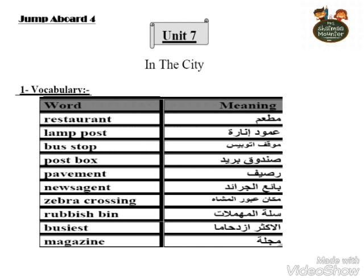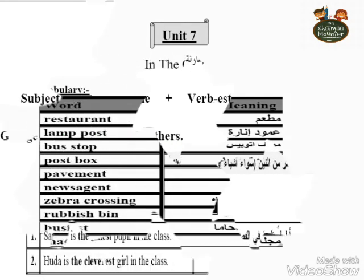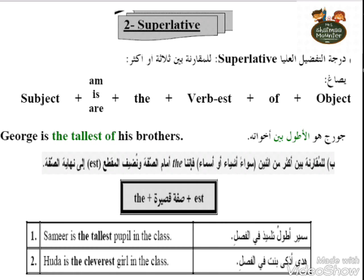Okay, this is the word Jumbo Board for Primary 4. Let's move to another part. Here grammar is the word Jumbo Board for Primary 4. For example, George is the tallest of his brothers.